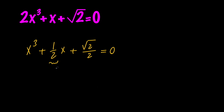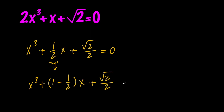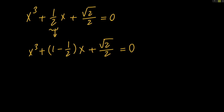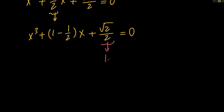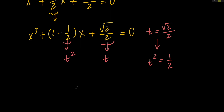Next, let's go ahead and replace 1 over 2 with 1 minus 1 over 2. So we have x cubed plus this times x plus root 2 divided by 2 equals 0. Next, let's go ahead and use the substitution method. We're going to substitute this number with t. So t equals root 2 divided by 2, which means that t squared is going to be 2 over 4 or 1 over 2. So if root 2 divided by 2 is t, then 1 over 2 is t squared, which means that our equation becomes x cubed plus the quantity 1 minus t squared times x plus t equals 0.